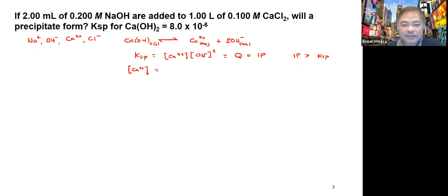If we have calcium 2 plus, we have 0.1 molar of the calcium 2 plus because that's where the source is, and there's 1 liter of volume. You divide it over the total volume, which in this case is so small, you could say just around 1.002 liters. So this is almost the same, 0.1 molar.